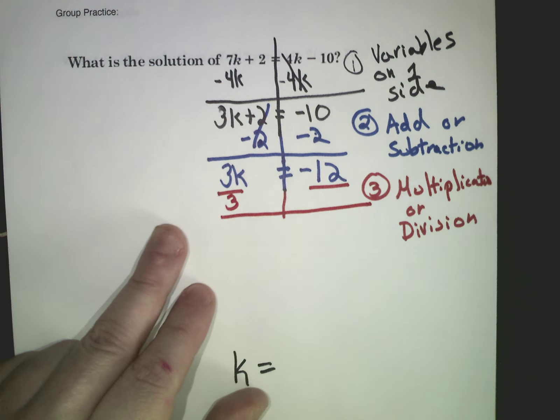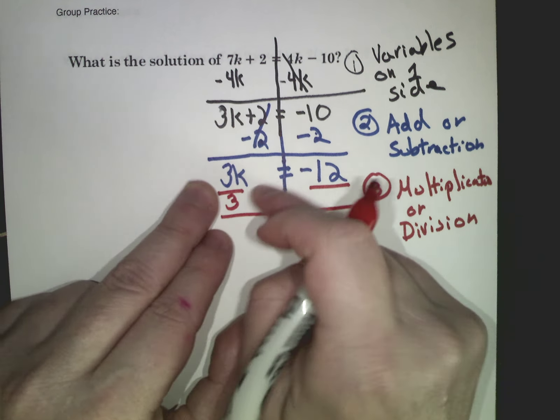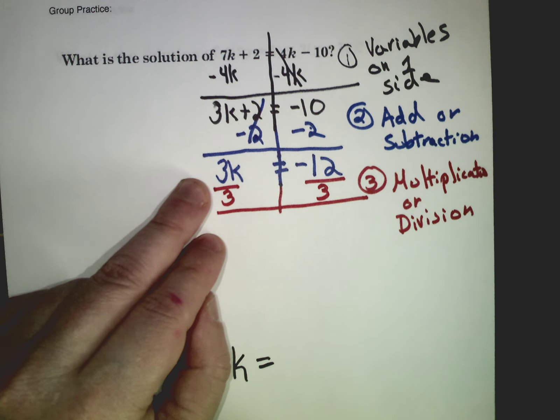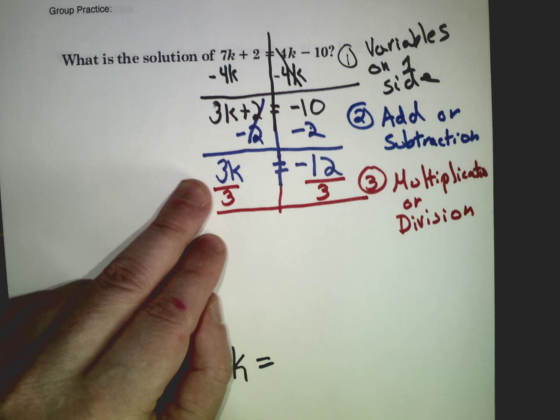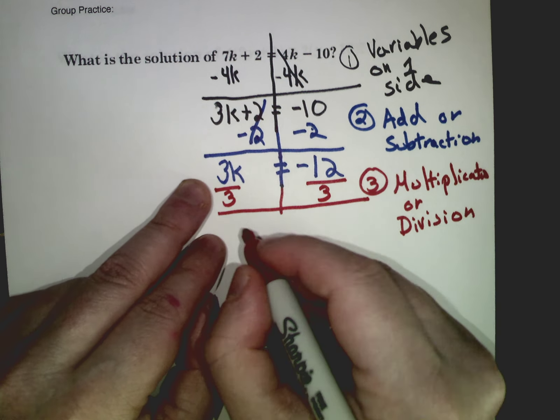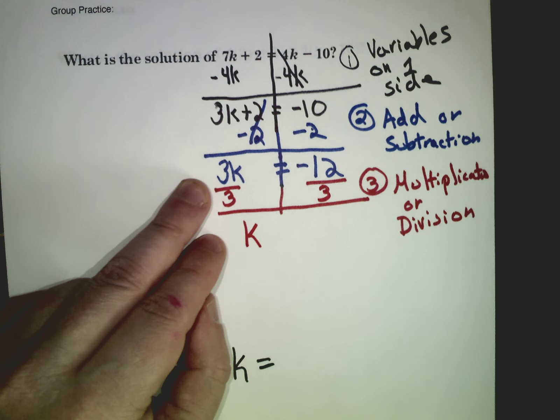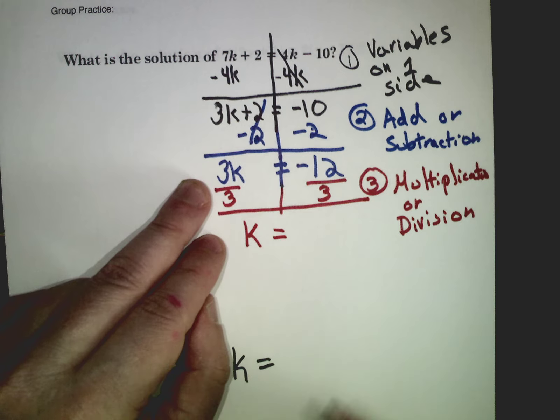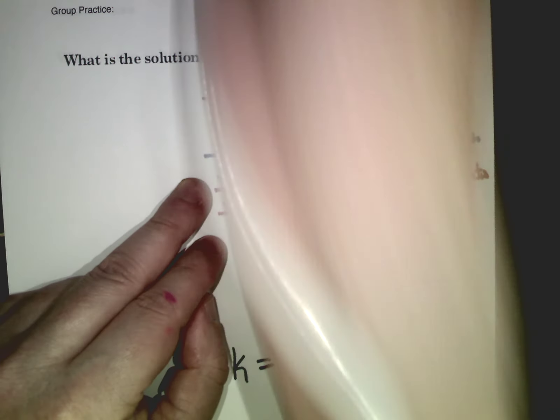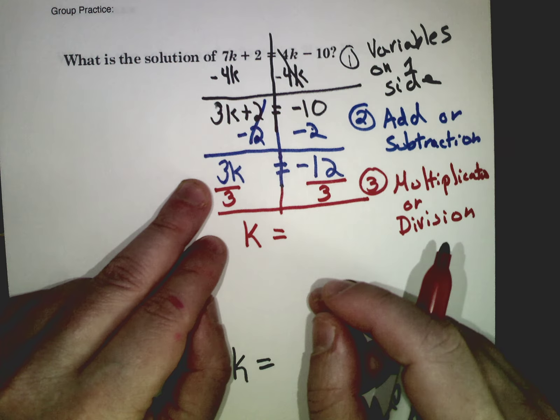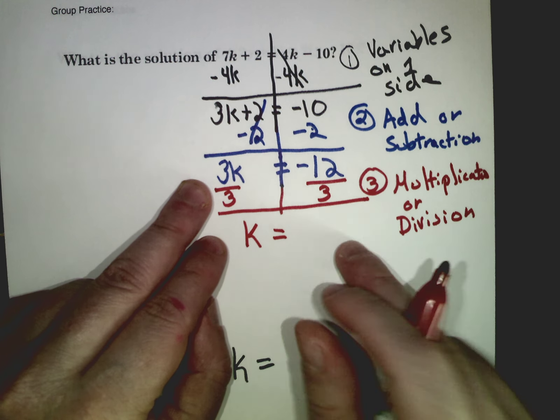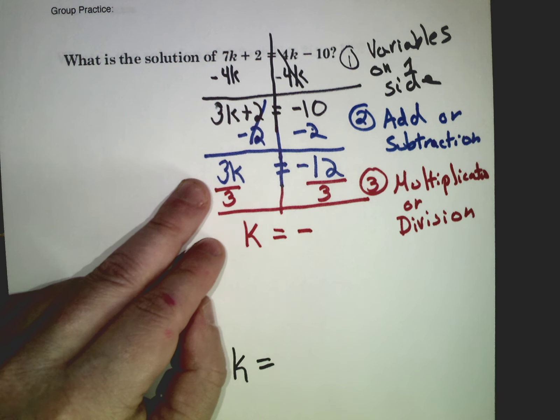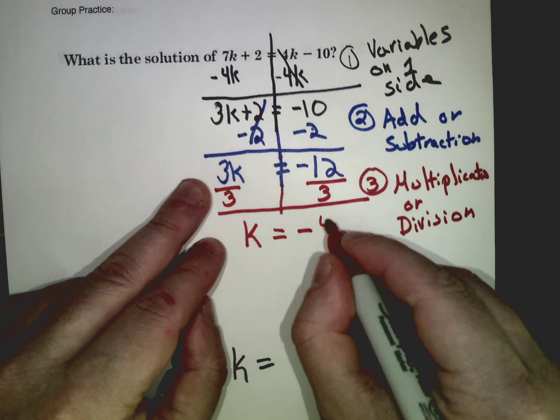So I'm going to divide by 3. I always focus on getting these numbers away from the k. Negative 12, because I have to do it on both sides. I divide that by 3. 3 divided by 3 is just 1, or 1k or k. I could bring down my equal sign. Negative 12 divided by 3. If I'm unsure, I put it in my calculator. But if you put negative 12 divided by 3 in a calculator, negative divided by a positive, there's a negative.